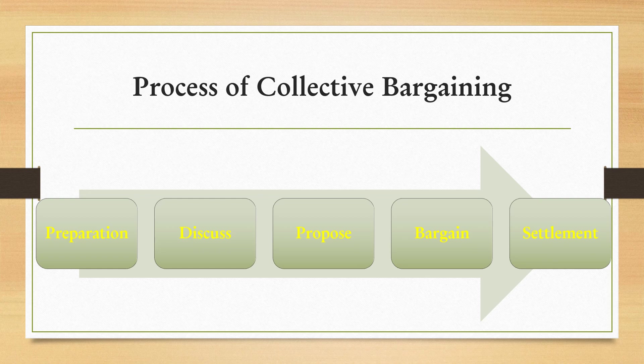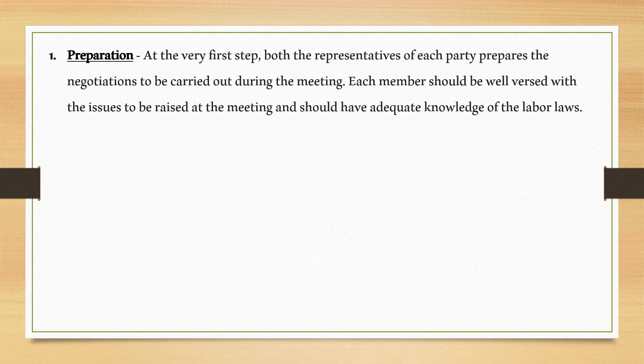The process of collective bargaining has five steps: preparation, discuss, propose, bargain, and settlement. In the first step — preparation — both representatives of each party prepare for the negotiations to be carried out during the meeting. Each member should be well versed with the issues to be raised and should have adequate knowledge of labor laws.